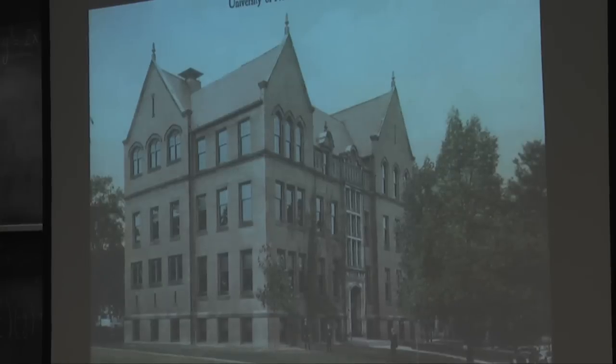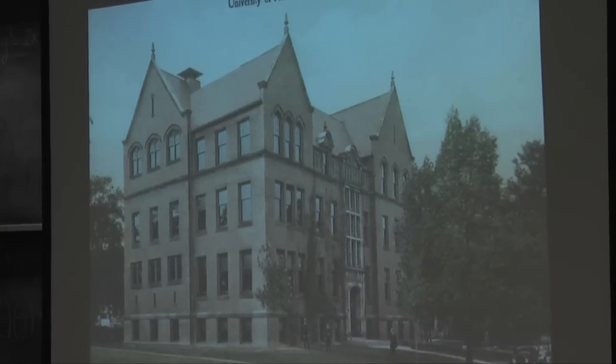The building actually ended up costing fifteen thousand dollars more than the original seventy-seven, and George Eastman covered that as well. Next time you're in that area, you can drive into the driveway near the School of the Arts and over the building you'll see the word 'Eastman' — it's the first building we named for George Eastman and it still stands.